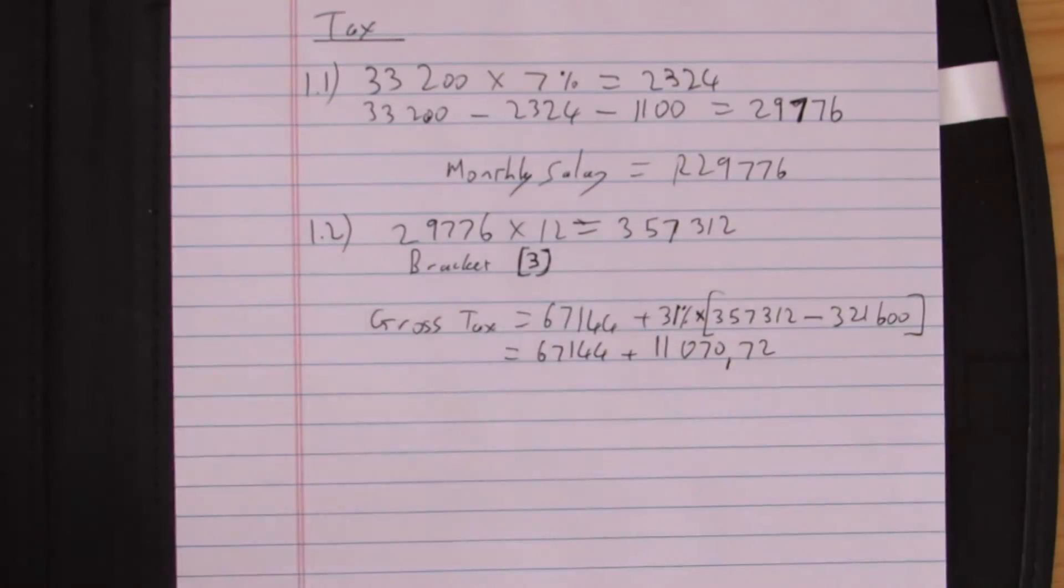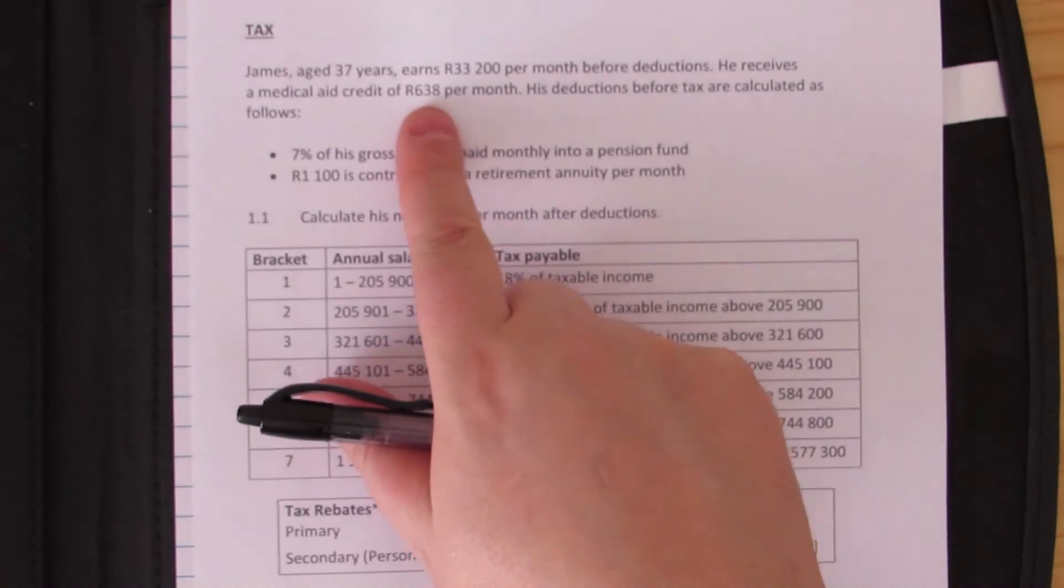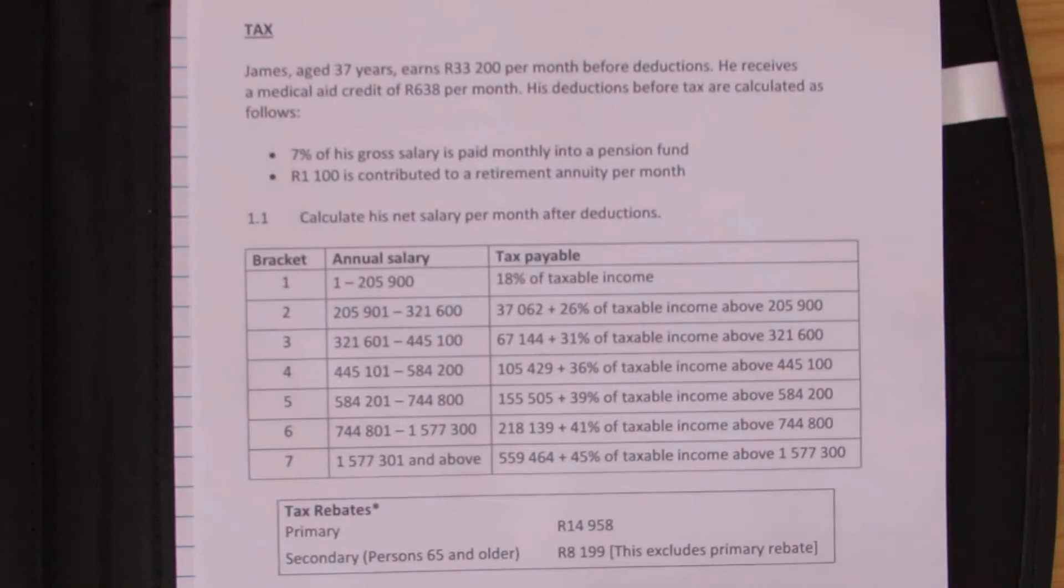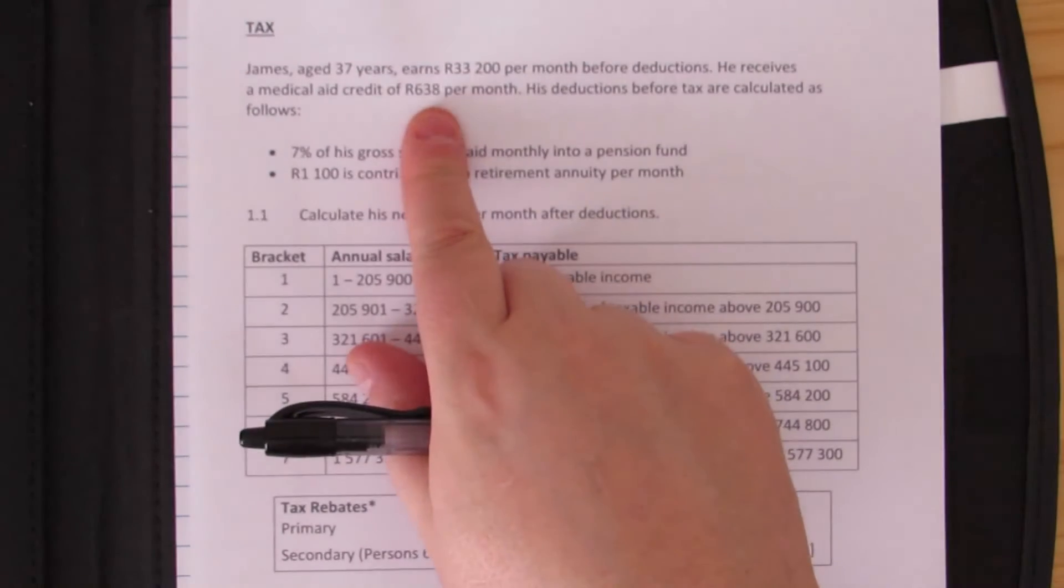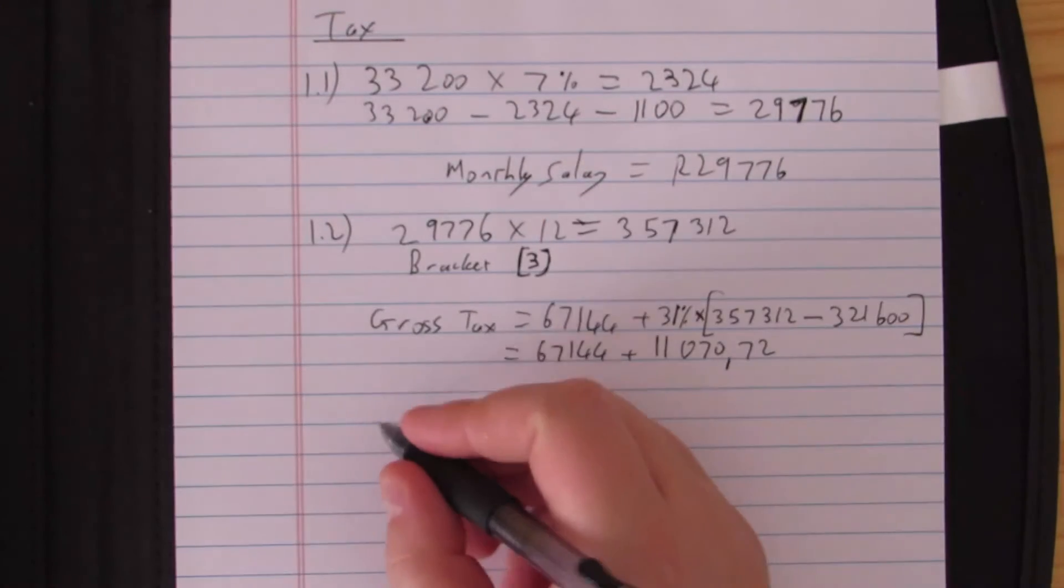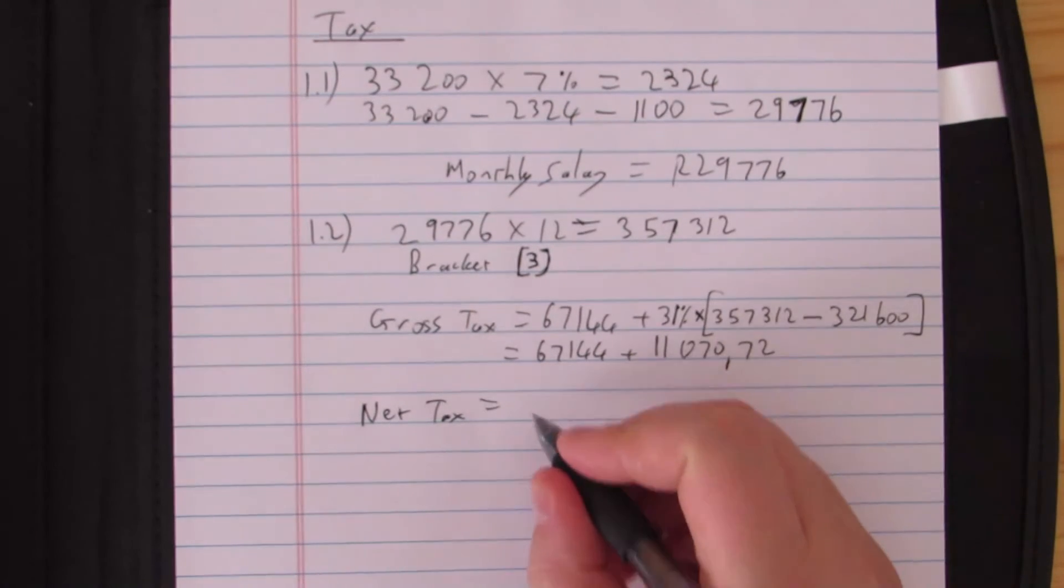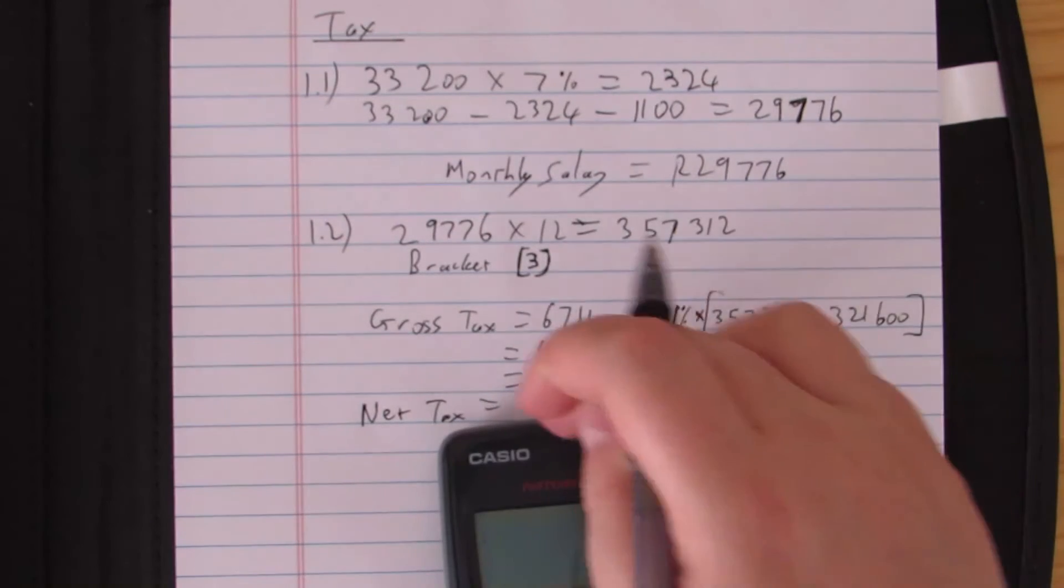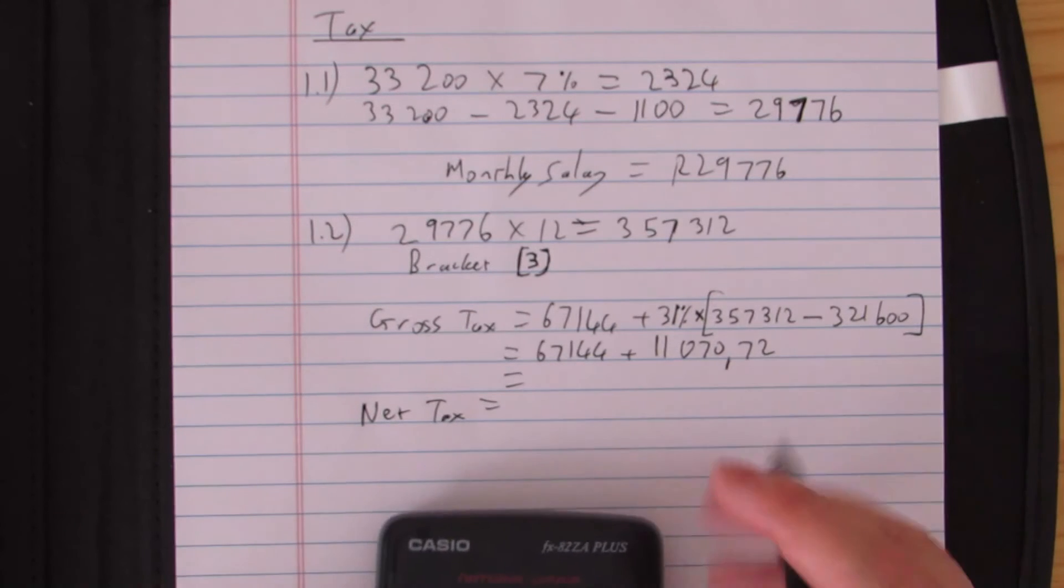That's our gross tax. There are a couple of things we need to look at now. He gets a tax rebate here, and also he gets a medical aid credit of 638 rand per month as well. Both of those come off the tax. This is an annual rebate; that is a monthly credit. We need to work around that. So I'm going to look at the tax that would be payable to SARS. I need to add those two together to get my total gross tax.